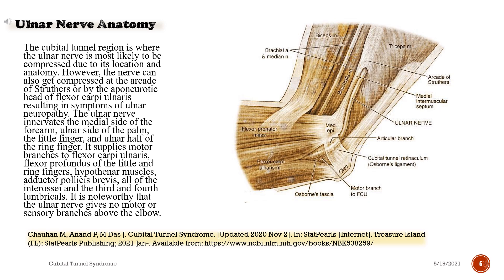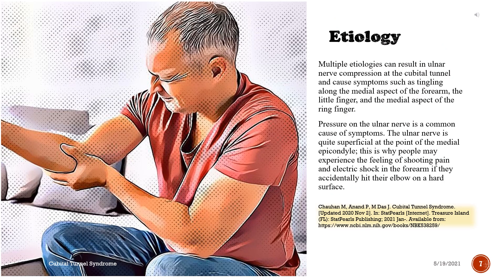The ulnar nerve supplies motor branches to the flexor carpi ulnaris, flexor digitorum profundus of the little and ring fingers, hypothenar muscles, adductor pollicis brevis, all of the interossei, and the third and fourth lumbricals. It is noteworthy that the ulnar nerve gives no motor or sensory branches above the elbow.